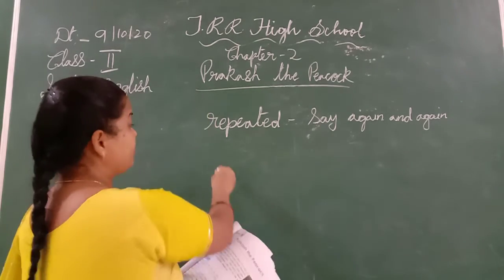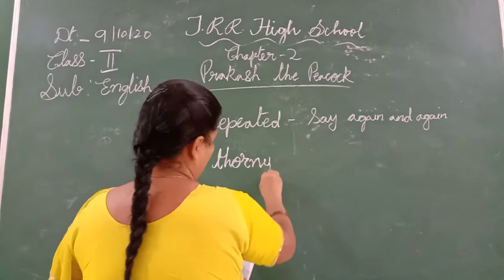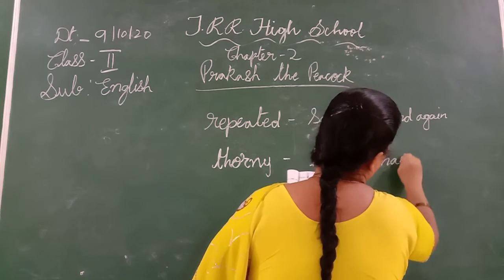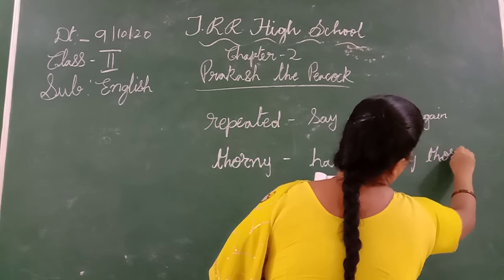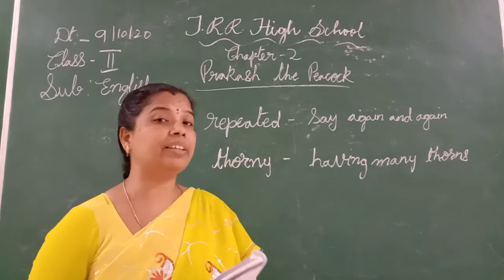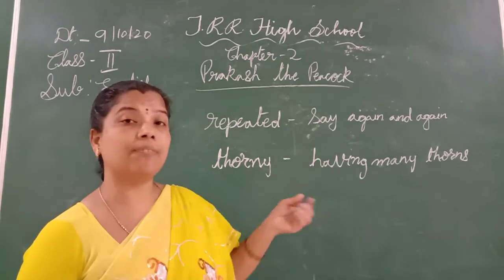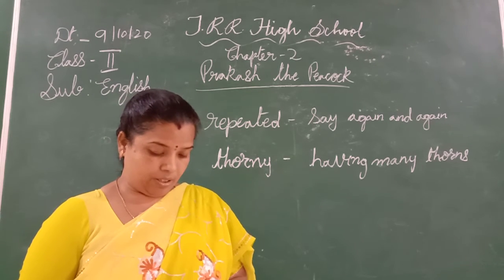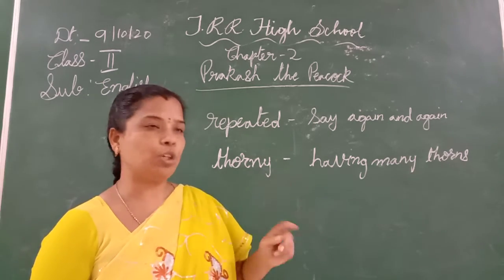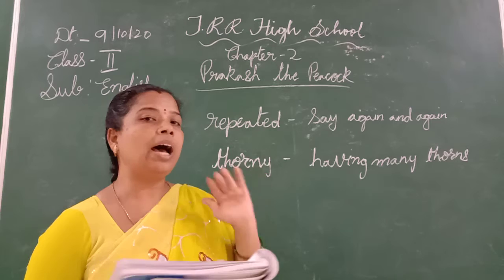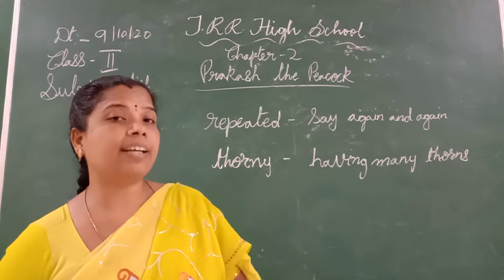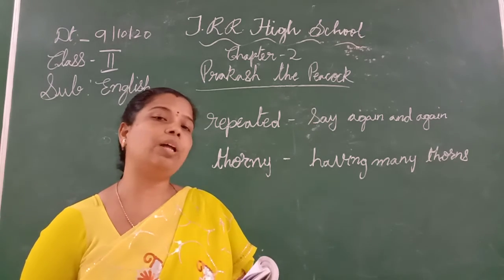Thorny means having many thorns. Where do you find thorns? You will find thorns on the rose plant, and on some more plants as well. So Prakash would practice — practice means to do again and again — he would practice behind the thorny bush, hide behind it, and dance in front of it. He started practicing in his hiding place, as he was very shy to dance in front of all.